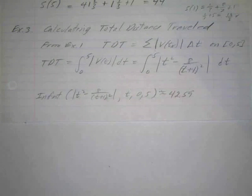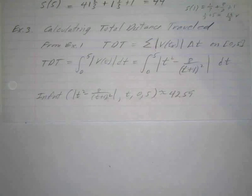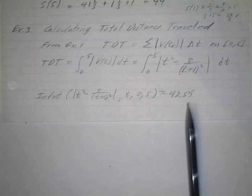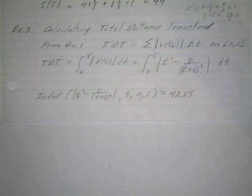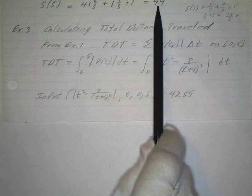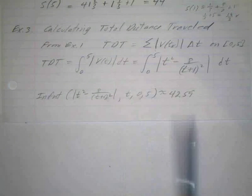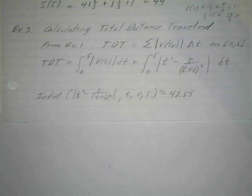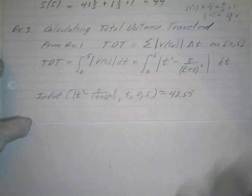This was the total distance traveled for example one. It looks like some of it might have been negative, because this is not where our displacement ended up — we ended up at 44. So it looks like we might have gone a little bit left for a while. You can graph it and see; probably some of it's going to be under the x-axis.